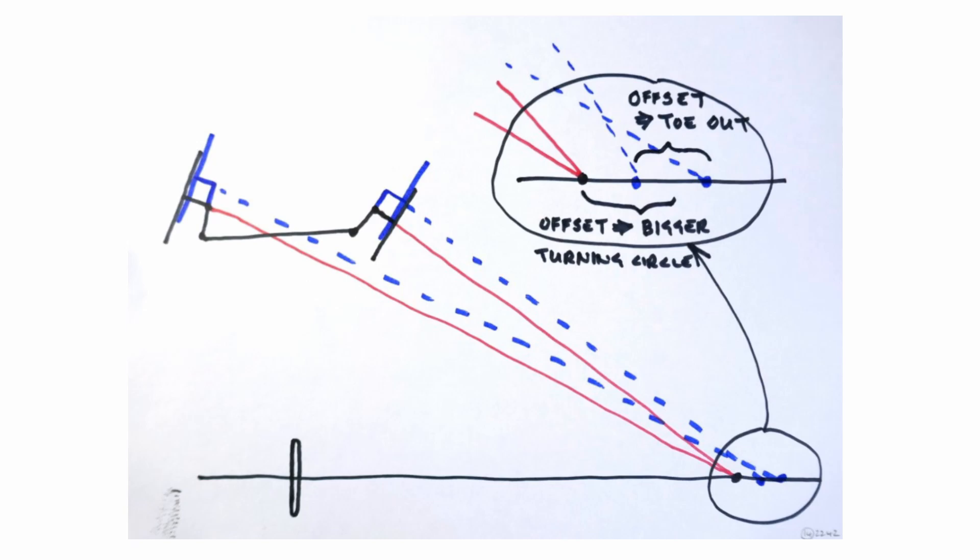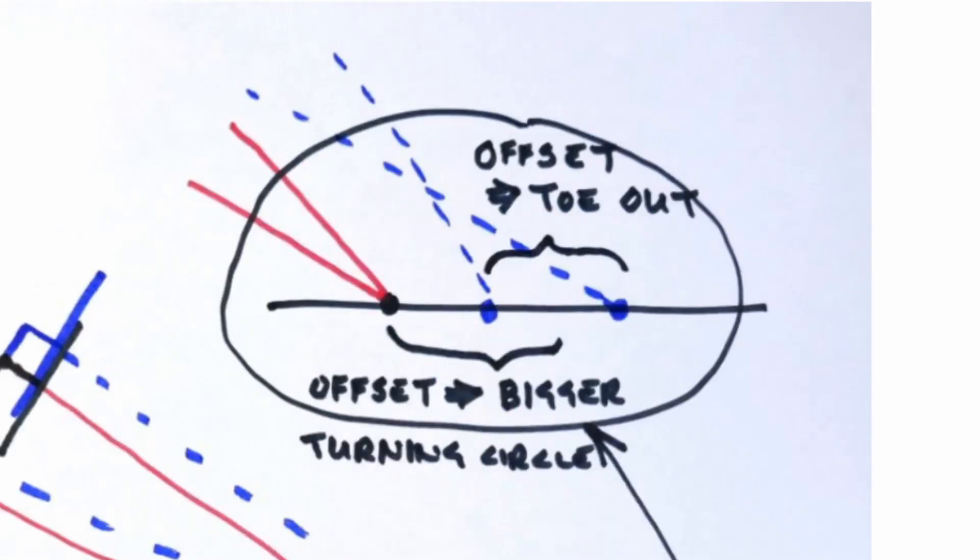This means that the steered wheels follow a slightly different path to the Ackermann geometry. By superimposing the offset wheels on the Ackermann diagram we can see that the extension of the wheel axes no longer intersect at the centre of the turn. They intersect the rear wheel's axis slightly further out and at a different point, meaning that the turn radius is slightly larger and the wheels toe out slightly, giving a bit of tire scrub.